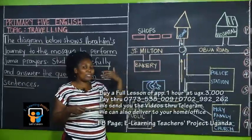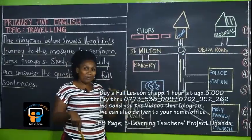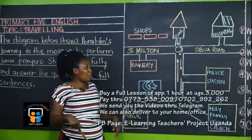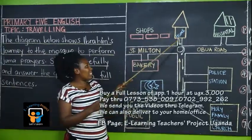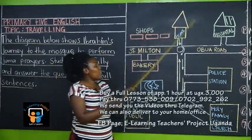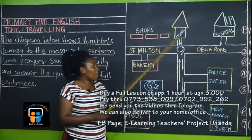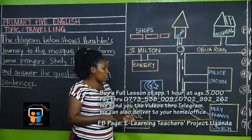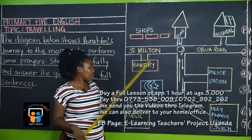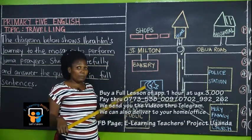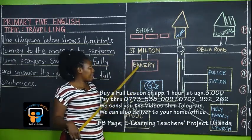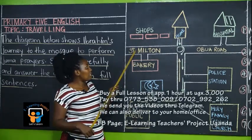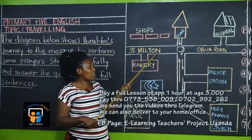Ibrahim's home is here. Shops, hospital, police station, Holy Family Catholic Church. This is the mosque, Symbol Bakery, and then roads. This is Saint Milton.